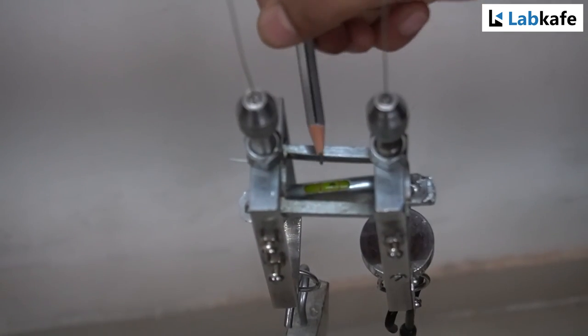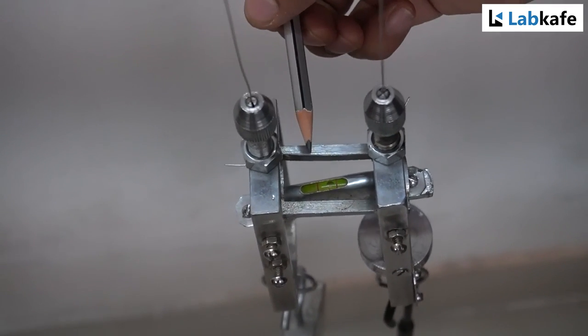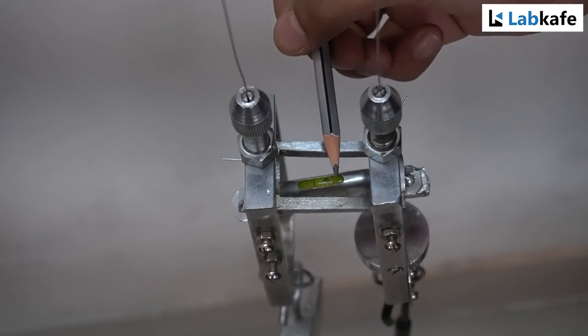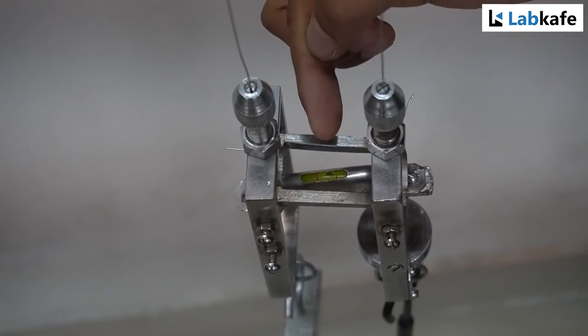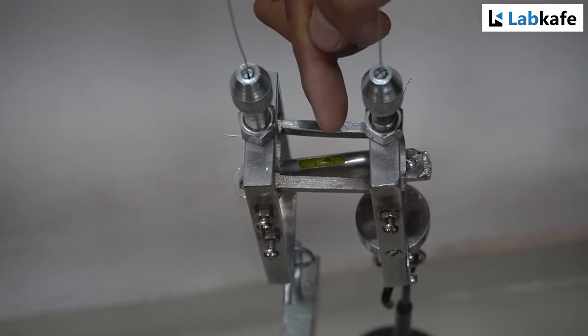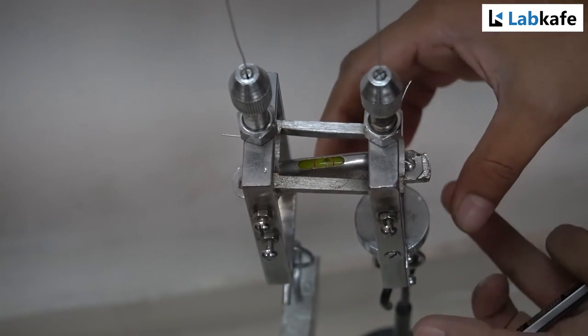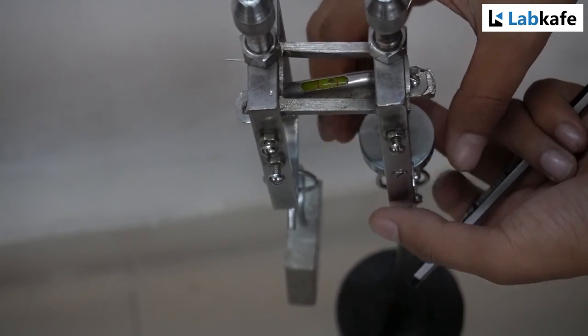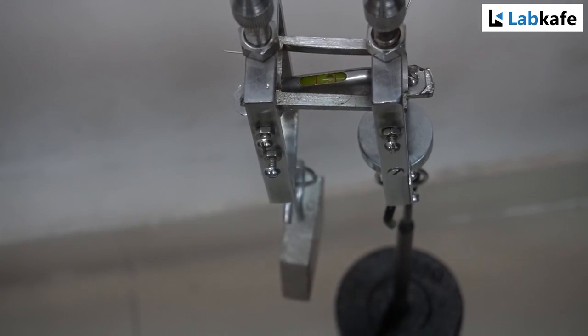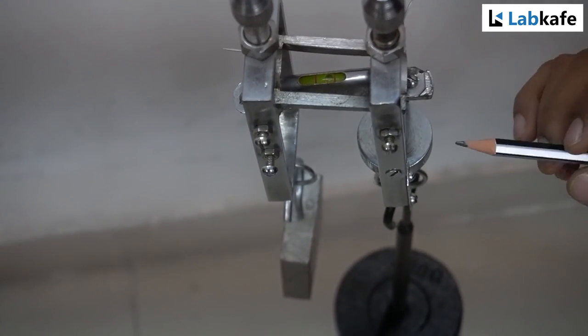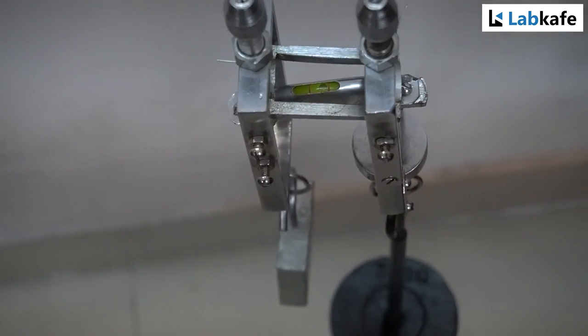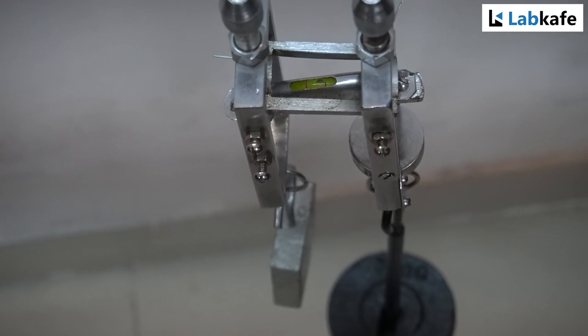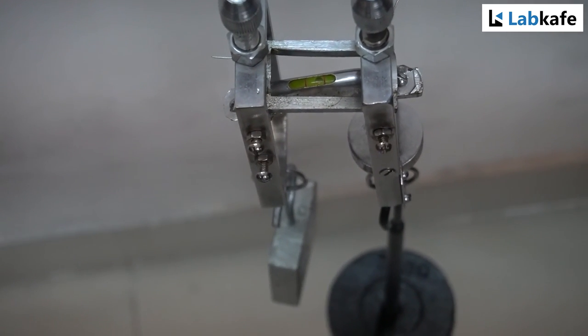After waiting for two minutes, as you can see, the bubble has been moved away from the reference line, which means the wire has been elongated. Now, I will bring back the bubble to its initial position by rotating the screw clockwise. Now I can see the reading on the circular scale disk is 8. I will note it down.